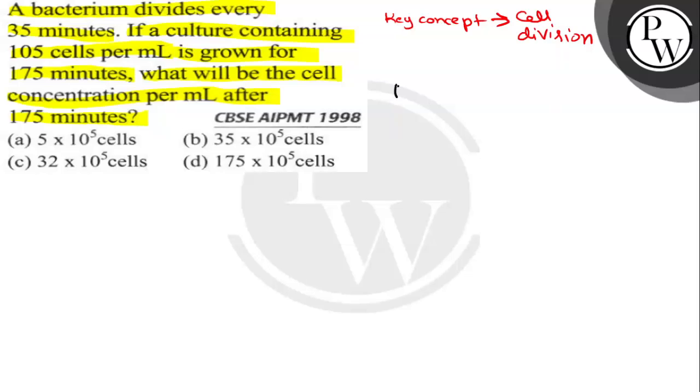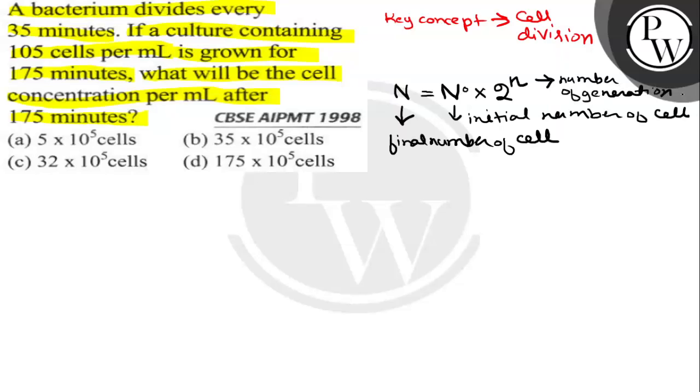The basic formula needed to solve this question is N equals N naught into 2 to the power n, where this N represents final number of cells which we have to find out, N₀ represents initial number of cells, and this small n represents the number of generations. Now small n is derived by the formula t by g, where t is the total time taken and g is the generation time.